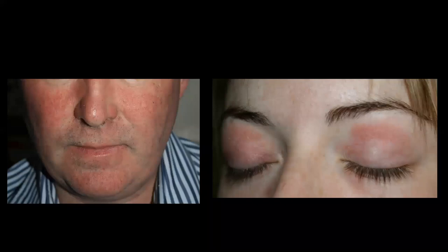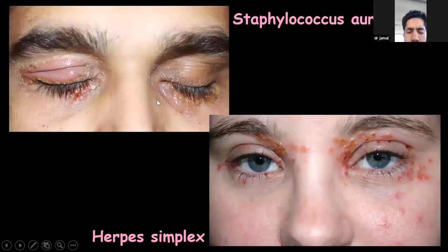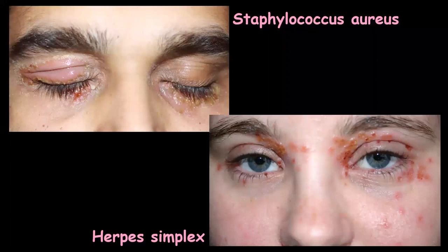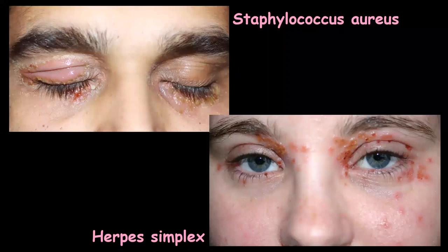We use tacrolimus for facial eczema, especially around the eyes. When you use tacrolimus, you have to be careful that patients don't have an infection. The patient on the left has a bacterial infection with Staphylococcus — it's yellowish at the edges, crusting and oozing. The patient on the right has a herpes simplex infection. You shouldn't use tacrolimus on those patients. Otherwise, tacrolimus is very useful around the eyes because we don't like steroids immediately around the eyes — they can cause glaucoma and cataract.